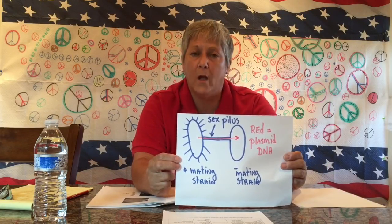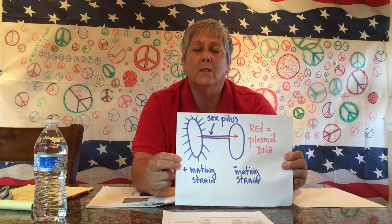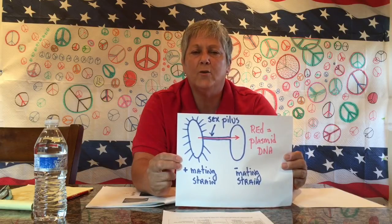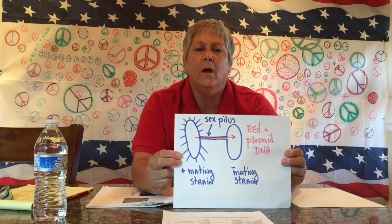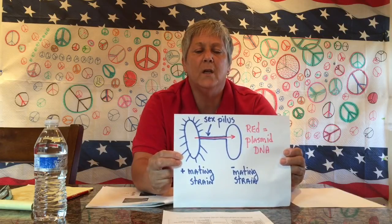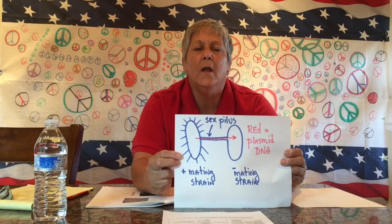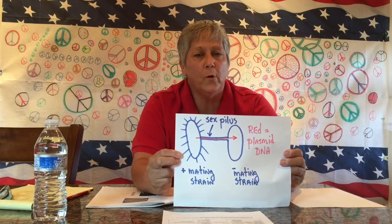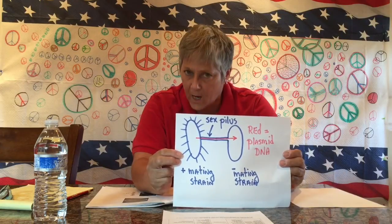A little bit later in this lecture I'll talk about plasmids in more detail. Generally, it's plasmid DNA that's going to be donated from one bacterium to another through conjugation. What's happened is these two bacteria come into contact by means of the sex pilus, the positive mating strain makes a copy of its plasmid, and the copy is transported through the sex pilus into the cytoplasm of the recipient cell.